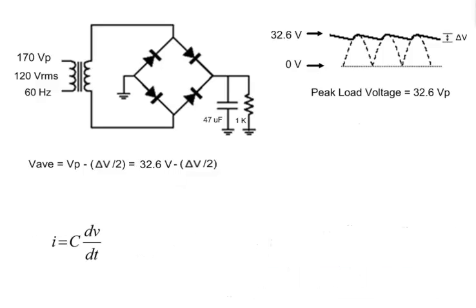Recall the equation for current in a capacitor. We can approximate it using algebra. In this approximation, delta-v, or the ripple voltage, is what we must find.